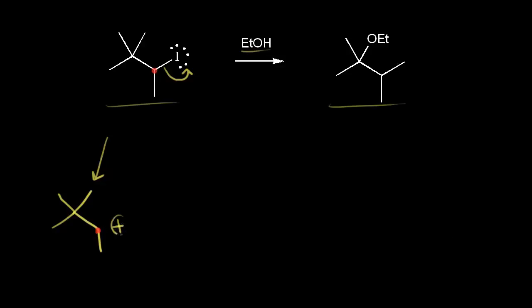If we look at this carbocation, it's secondary. The carbon in red is directly bonded to two other carbons, so this is a secondary carbocation.